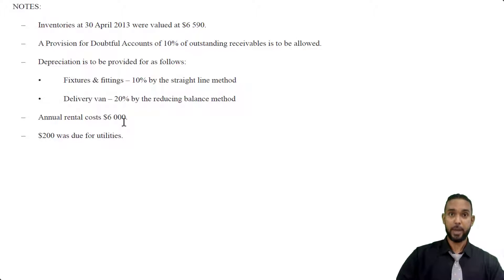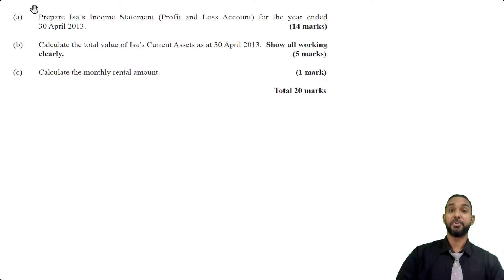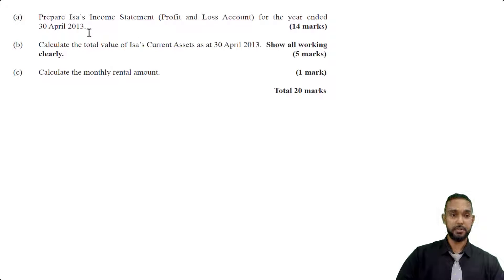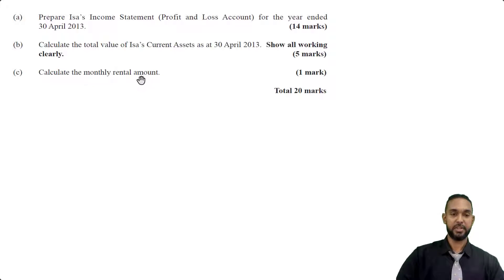Let's take a look at the official requirements. They want us to prepare ISA's income statement — profit or loss account — for the year ended 30 April 2013. Then they want a calculation of the total value of ISA's current assets as at 30 April 2013, with all working shown clearly. And last, calculate the monthly rental amount. Let's start working on the income statement.